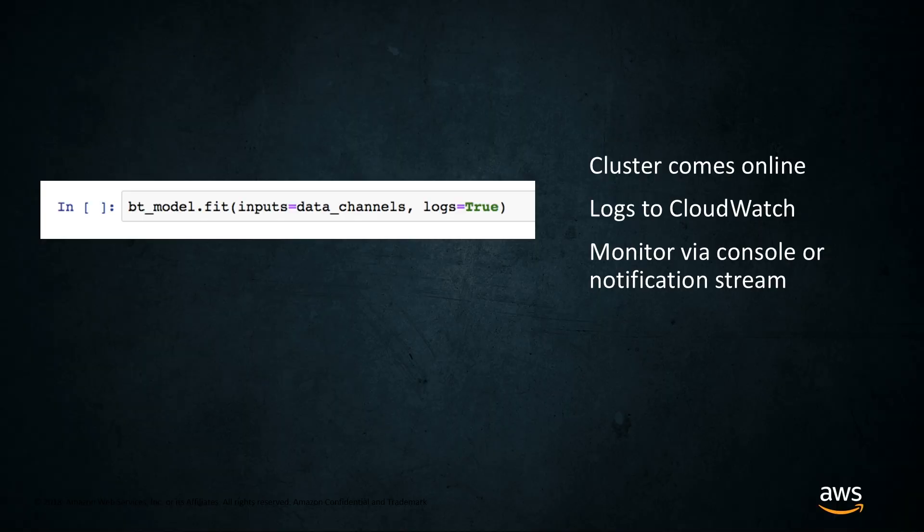Then we call model.fit, and what's happening is that a new cluster — a new EC2 instance — comes online. A few minutes after it's up, you're going to see logs sent out to CloudWatch. CloudWatch gives you point-by-point metrics on your model: how well it's training, what the throughput is, what your CPU utilization is. You can monitor that performance via the console or through a notification stream.